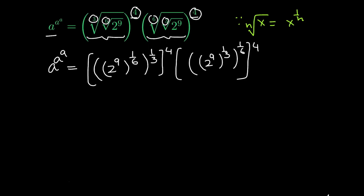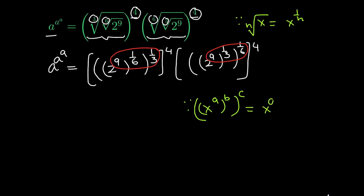So in the next step I am going to multiply the exponents. Because we know the property: if x raised to the power a raised to the power b raised to the power c, this can be written as x raised to the power a times b times c. So in the next step, a raised to the power a raised to the power a is equal to 2 raised to the power 9 times 1 over 6 times 1 over 3, whole raised to the power 4.